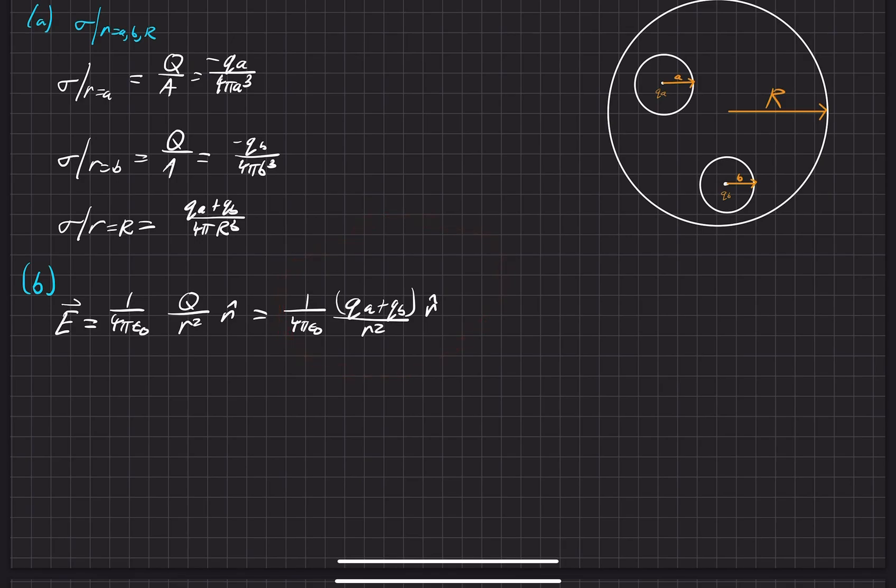It's as if you superimposed these two charges at the center, and then the field extends radially outward from the outside surface of this large conducting sphere.